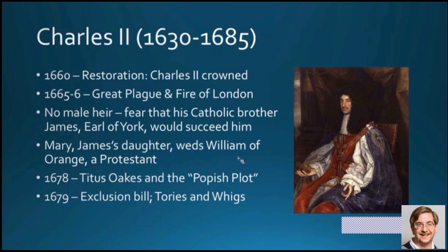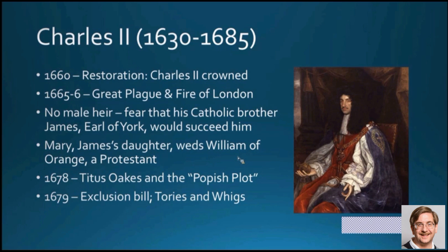In an effort to head this off, James's daughter was married to William of Orange, a Dutch nobleman and a Protestant, so that there would be a safe Protestant transition of power. In 1678, a fellow named Titus Oates played on the fears of the people, declaring there was a Popish plot to kill Charles II and put James on the throne. In 1679 a bill was put forward that would have excluded by law all Catholics from the British monarchy forever. People divided into two parties — the Tories and the Whigs — over this Exclusion Bill, which is the origin of those party names still used in England today.